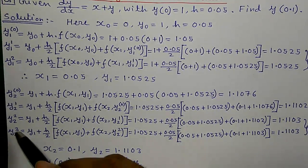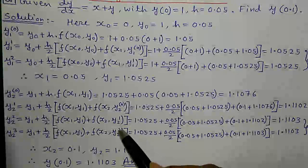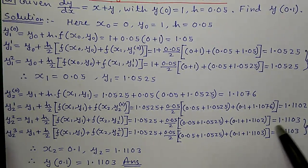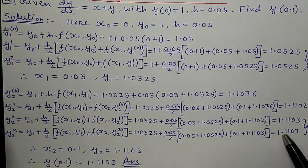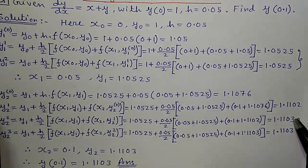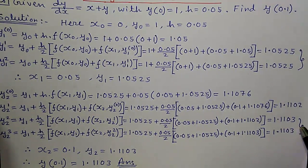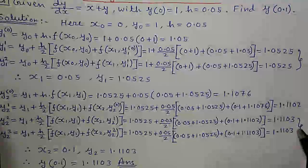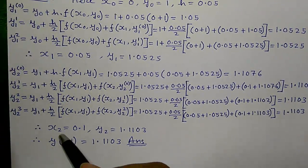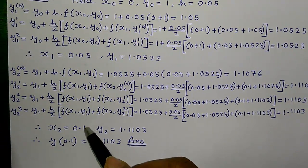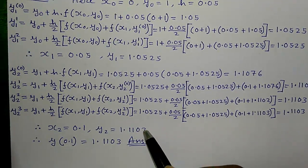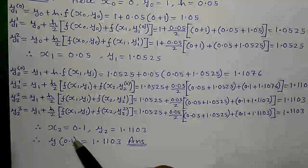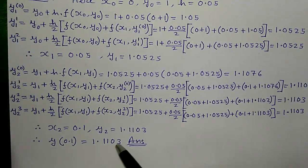Similarly, y2(3) uses the same formula, putting 1.1103 in, which again gives 1.1103. Since we are getting exactly the same value in two successive iterations, we can stop. We can say x2 is 0.1 and the corresponding y2 is 1.1103. So y(0.1) equals 1.1103.